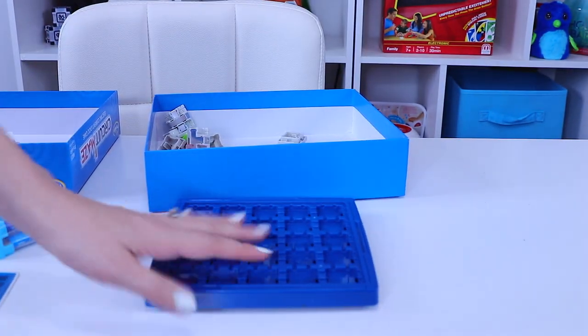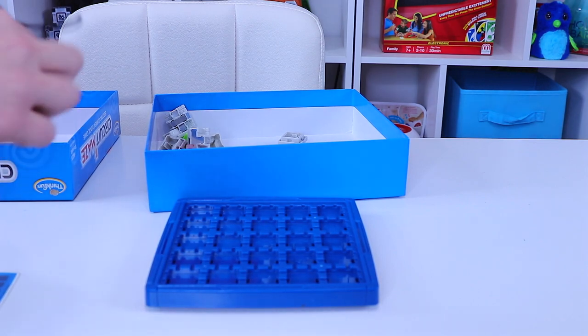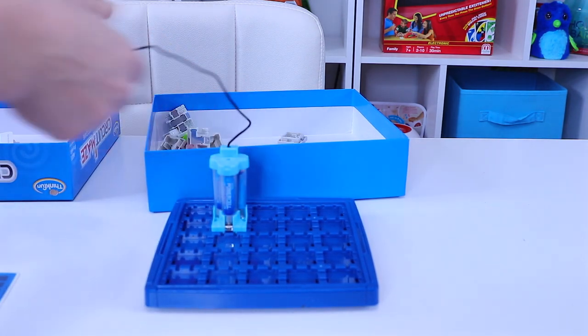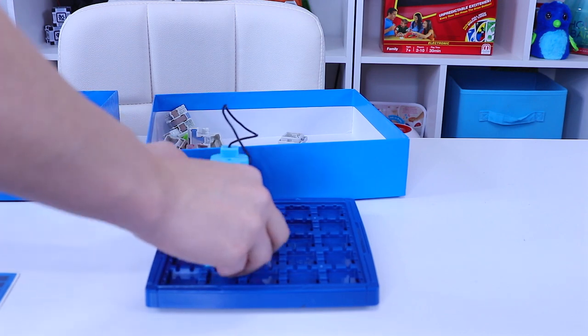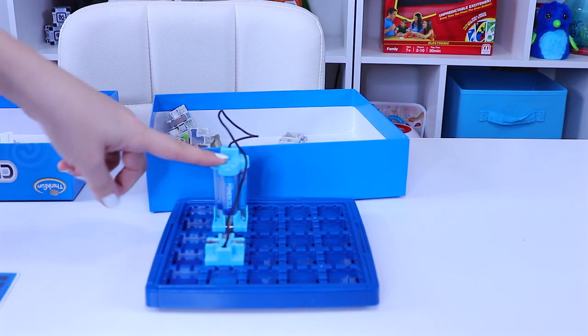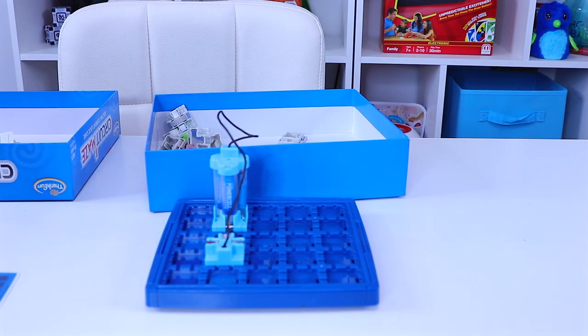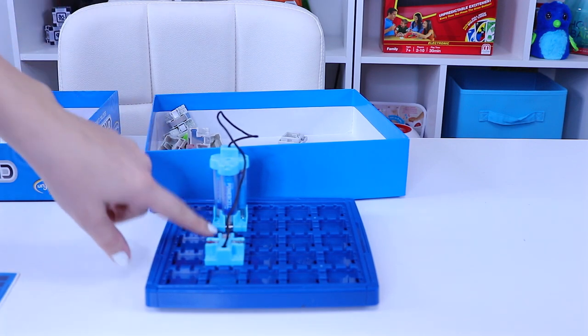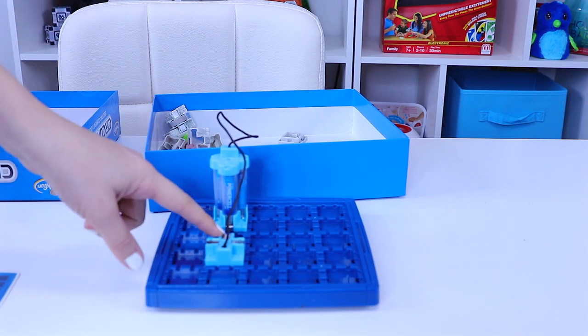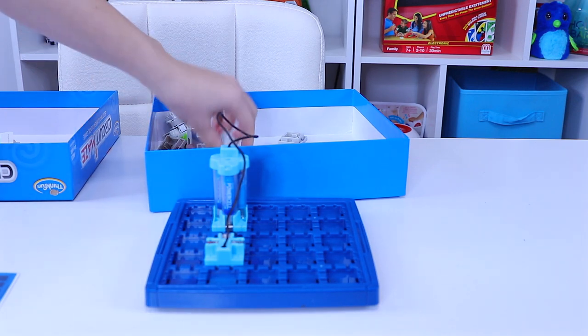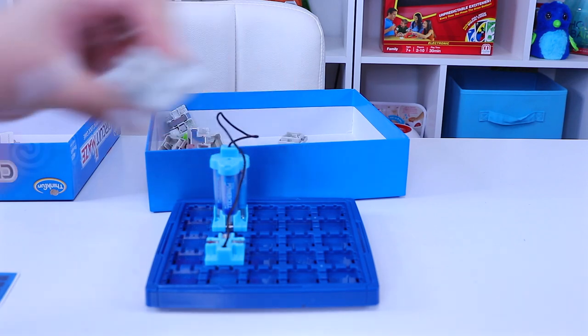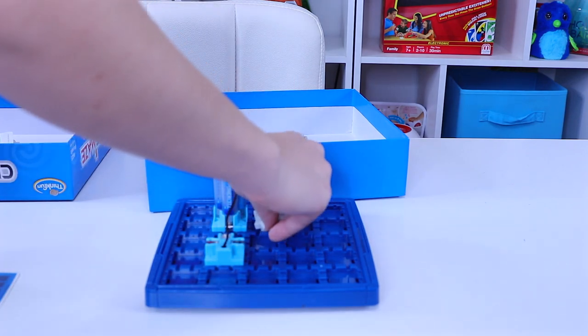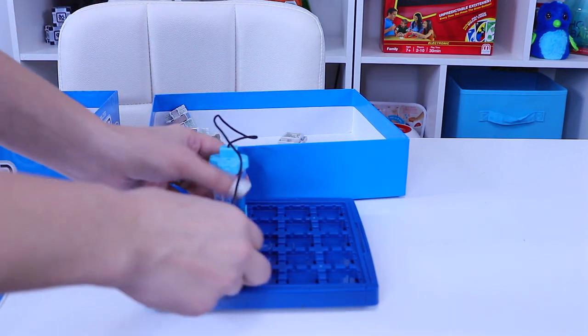First I'm going to take my board and I'm going to place my start piece and my end piece. Now the start and end piece have positive and negative charges and the charge comes out here on the side with the positive and ends here on the negative side.